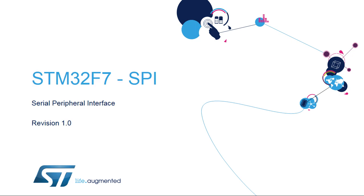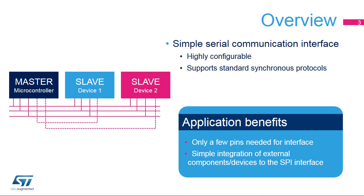Hello, and welcome to this presentation of the STM32 Serial Peripheral Interface. The Internal Serial Peripheral Interface, or SPI, provides a simple communication interface allowing the microcontroller to communicate with external devices. This interface is highly configurable to support many standard protocols. Applications benefit from the simple and direct connection to components, which requires a few pins. Thanks to the highly configurable capabilities of the SPI, many devices can be simply accommodated in the existing project.